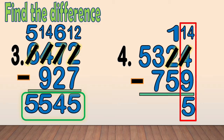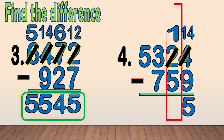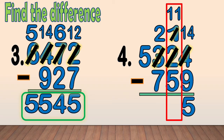Next, we subtract the tens: 1 minus 5. We cannot subtract 5 from 1, so we regroup 100 from 3. Now we have 11 tens. We cross out the 1 and write 11 as new tens. Now we only have 2 hundreds — we cross out the 3 and write 2 at the top. We subtract the tens: 11 minus 5 equals 6.